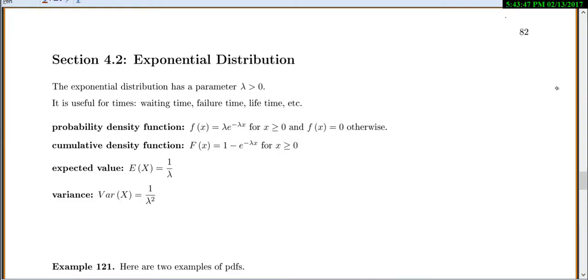So here is section 4.2, the exponential distribution. It has a parameter lambda greater than 0. Remember, parameter means some number that defines your distribution. And the exponential distribution is useful for times, like waiting times, failure time, lifetime, life expectancy, etc.